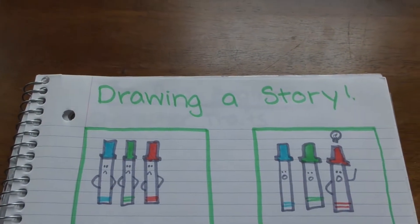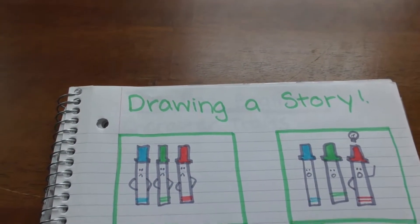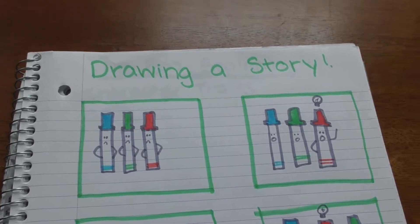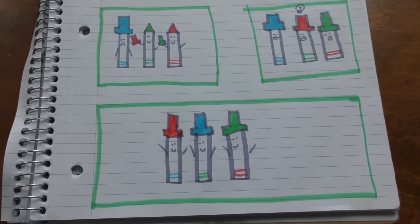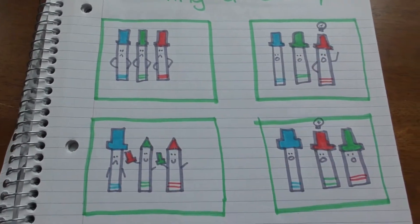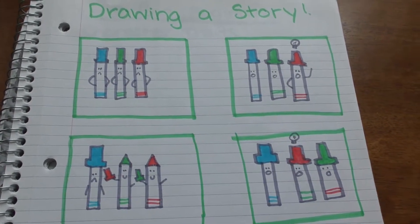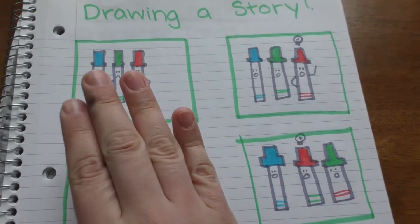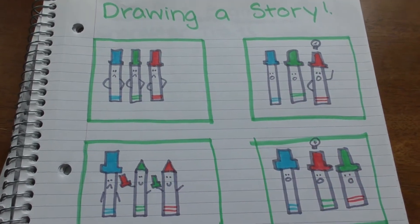Today we're going to look at drawing a story and then telling a story based on our pictures. I drew some pictures here, but if I just gave you the pictures you would have no idea what was going on. So what we need to do is tell what's happening in each part of the story.